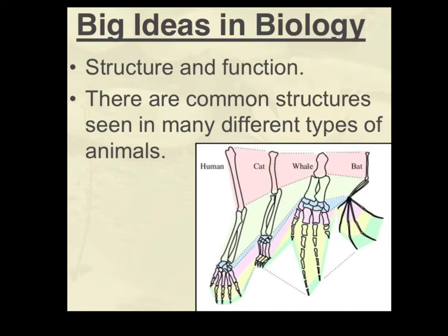They all have one big bone in the upper arm and two bones in the lower arm — for us, this is the radius and the ulna — and then lots of small bones at the end of the limb. These similarities all point to the idea that we have a common ancestor. All vertebrates — all animals with a backbone, like us, cats, whales, and bats — share a common ancestor. That's why we see these common bone patterns, even though the function of the limb is different. If we all came from different places, different functions would likely mean different shapes and structures too. The fact that they share the same structure, despite different functions, points to a common ancestor.